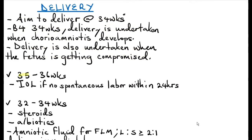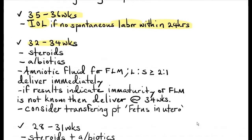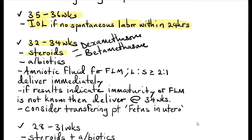If the patient presents between 35 to 36 weeks gestational age with PPROM, you do induction of labor if there has been no spontaneous labor within 24 hours, since fetal lung maturity is already complete. If the patient is between 32 to 34 weeks gestational age, you give steroids to improve fetal lung maturity. Commonly used steroids are dexamethasone. The benefits of steroids include improved fetal lung maturity, reduced risk of necrotizing enterocolitis, and reduced risk of intraventricular hemorrhage.